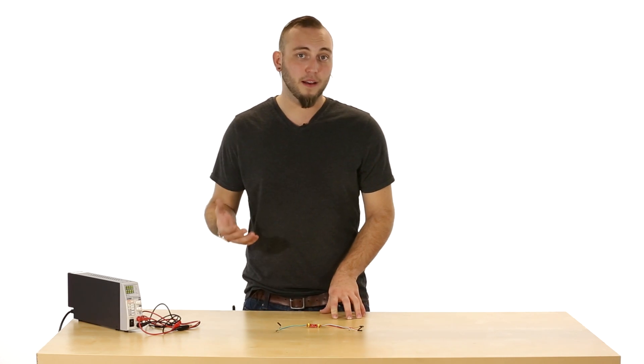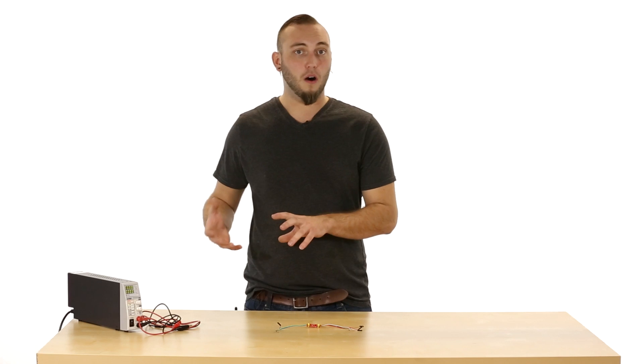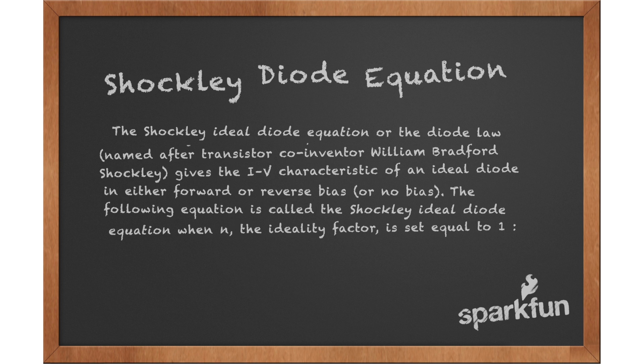The reason that would happen is because LEDs, like all diodes, follow a law. There's actually an equation - it's Shockley's diode equation. And what it does is it describes the ideal diode, it describes the current to voltage curve. It's an exponential relationship.